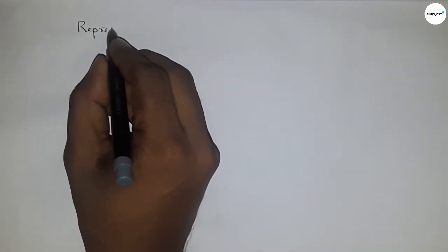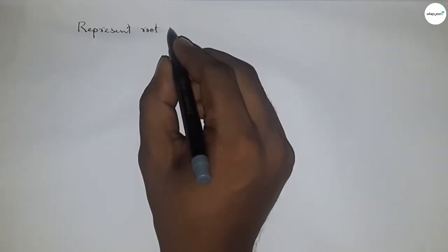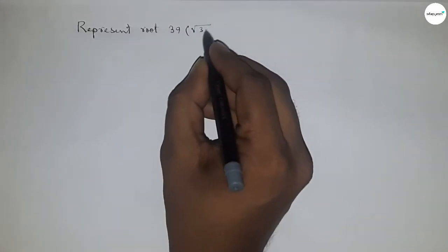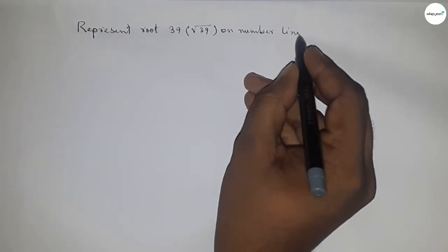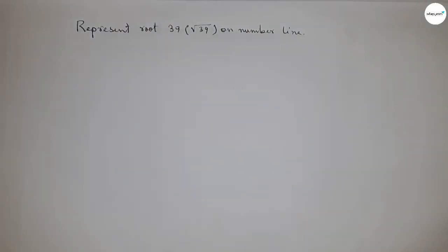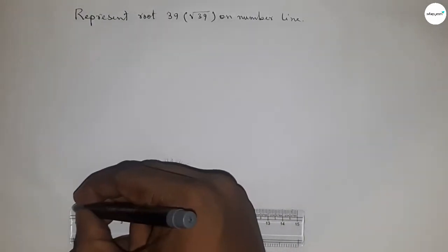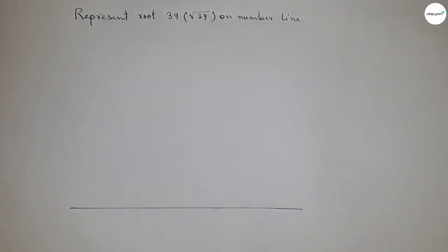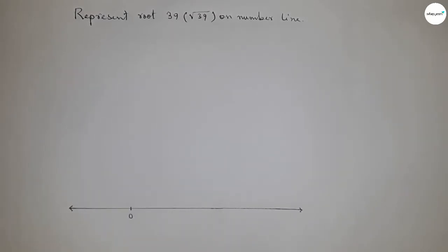Hi everyone, welcome to SSR Classes. Today we are learning how to represent root 39 on the number line. First, draw a line of any length and mark the ends with arrows, taking the starting point as zero.